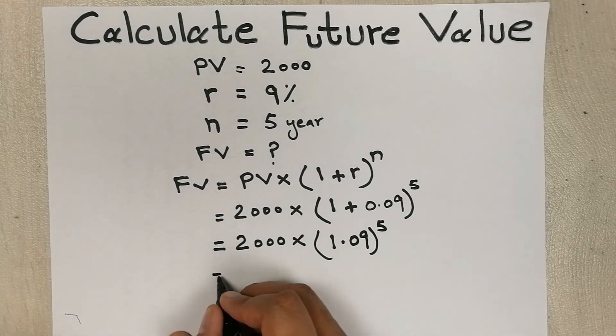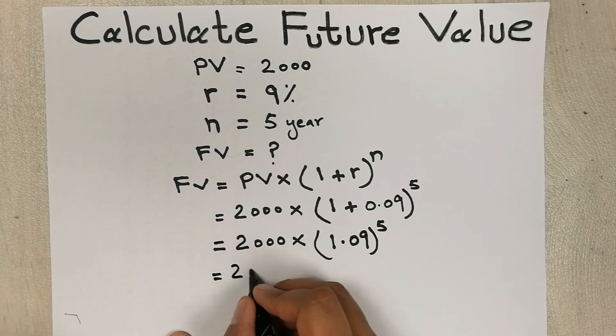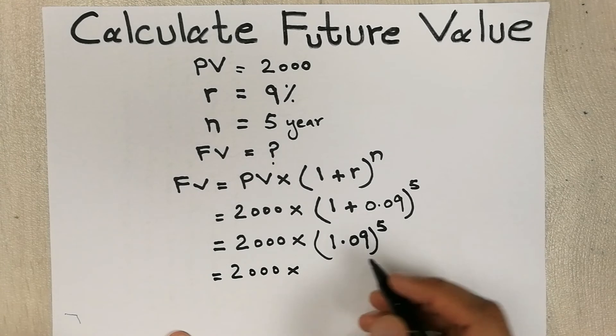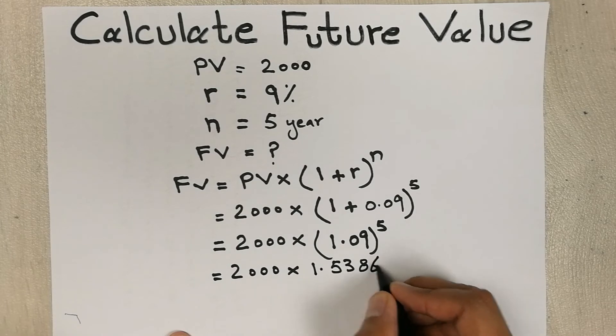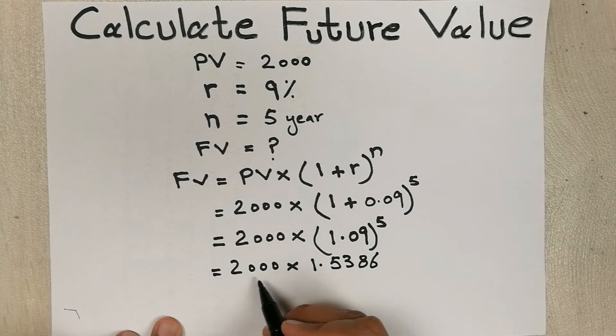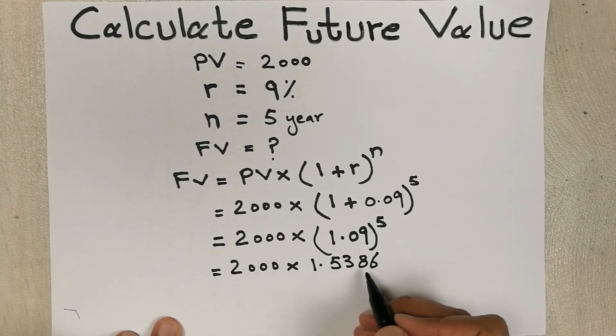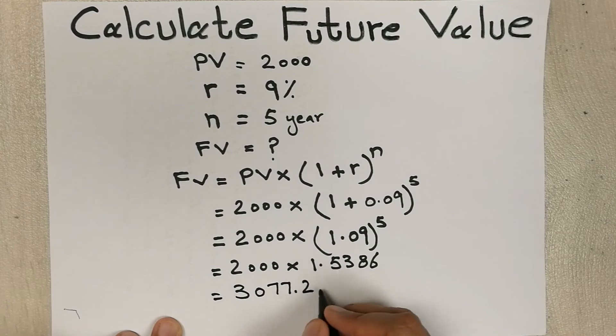In the next step we will calculate this. 2000 multiply, and 1.09 raised to the power 5 gives us 1.5386. In the last step we multiply 2000 with 1.5386, and our answer is 3077 dollars and 25 cents.